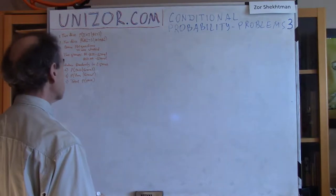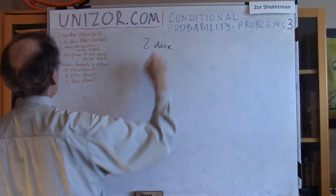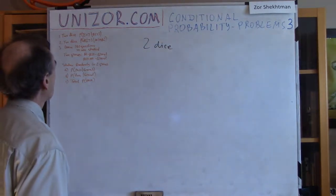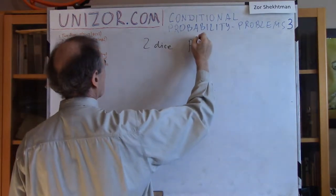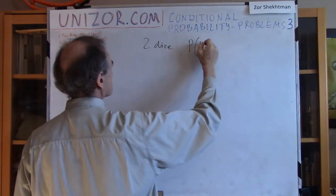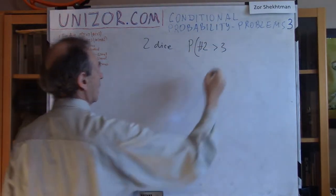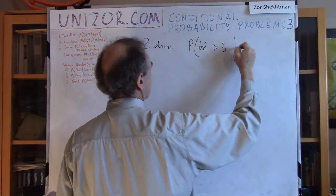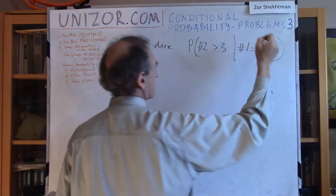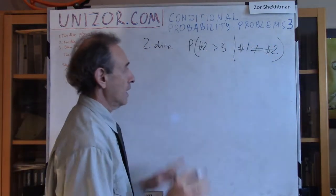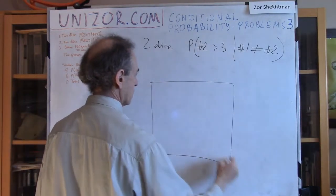It's such a simple problem, and I spent so much time on it just because I want you to understand completely what conditional probability is. Number 2 — very similar. Again two dice: find the probability that the second die shows a value greater than three, given that the first die is not equal to the second.